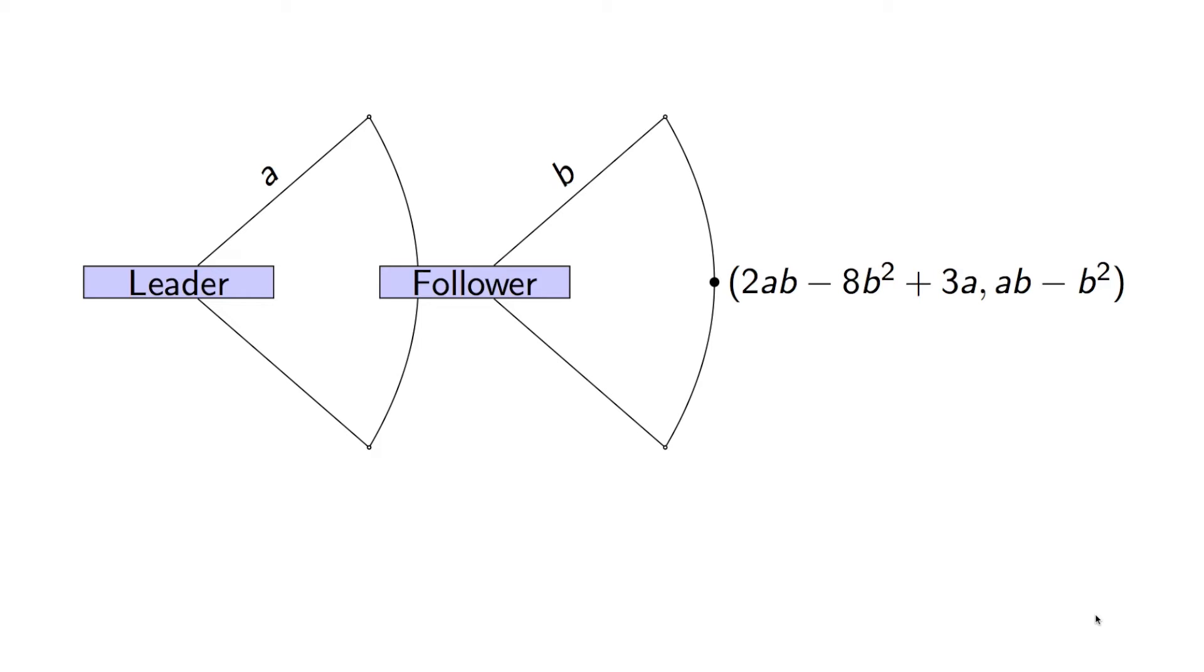So here's a game. This is a very different type of extensive form game we've seen so far in that we are allowing our strategies to be continuous, and that's how we denote it. So we have a continuous strategy denoted by an arc. So the leader will choose some number A, a real number A.